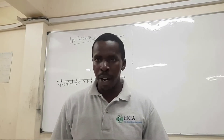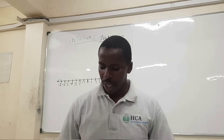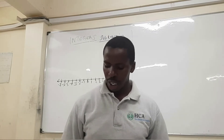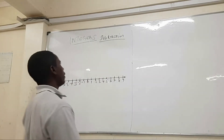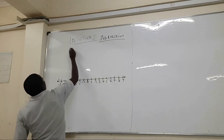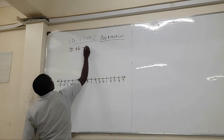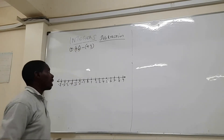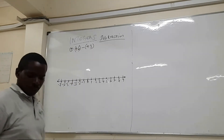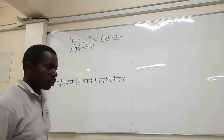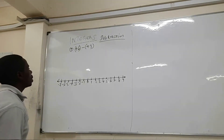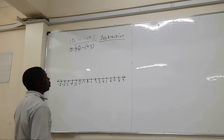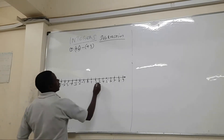To demonstrate this we are going to have some examples. Example one: plus six minus plus three. We have plus six minus plus three. The first thing is to locate the two numbers — plus six and plus three — on the number line.